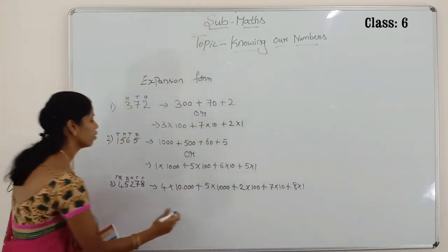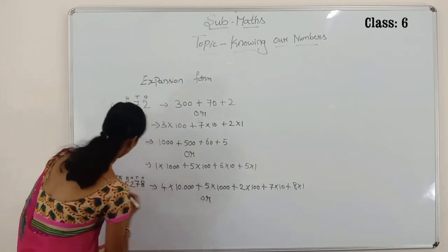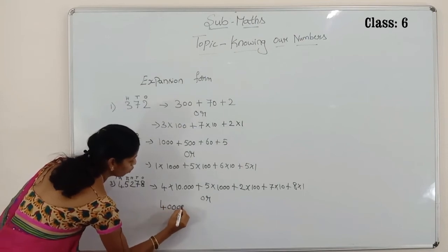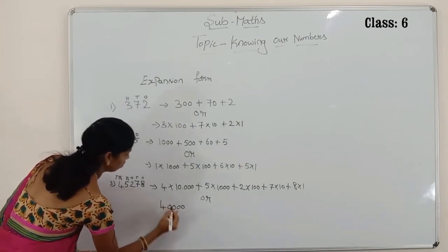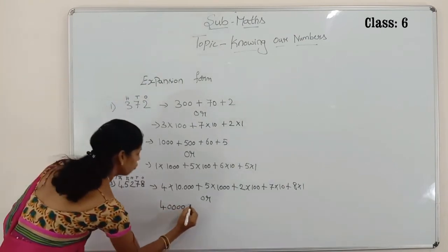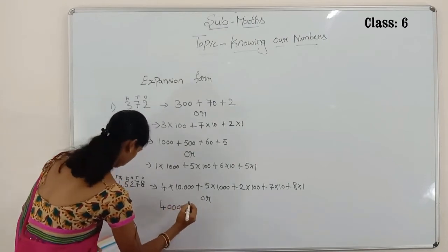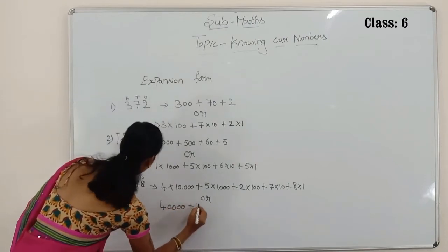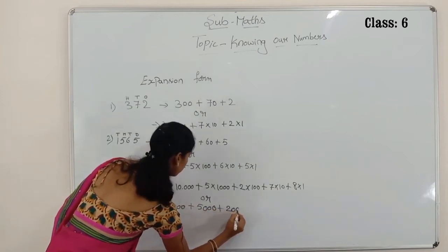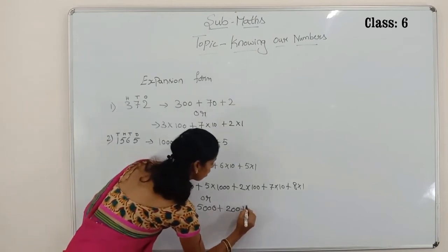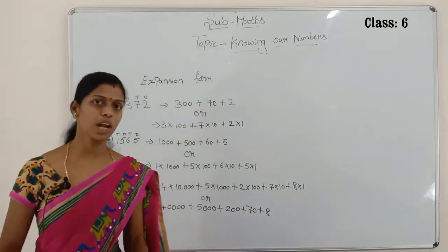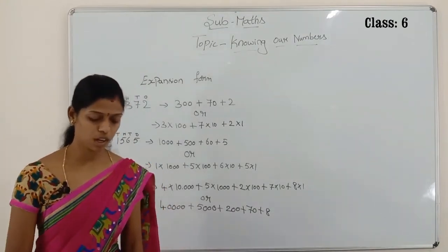You can write it like this — or the other method: 40,000 plus 5,000 plus 200 plus 70 plus 8. Now you know how to write the expansion form. You understood all?